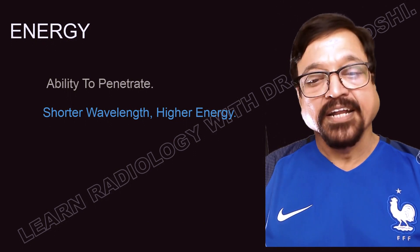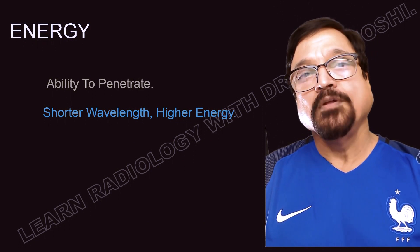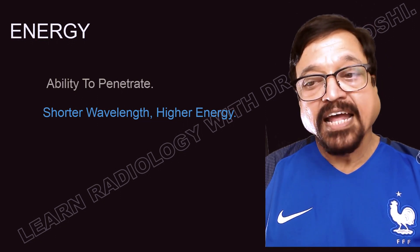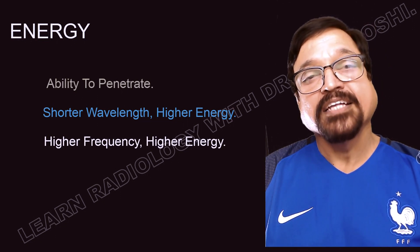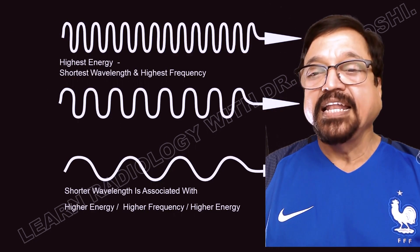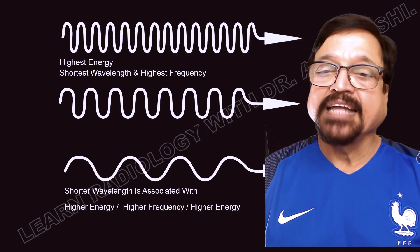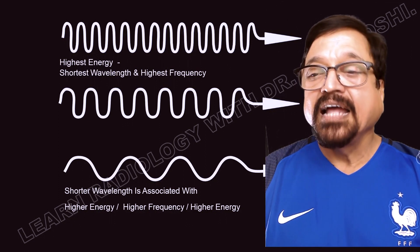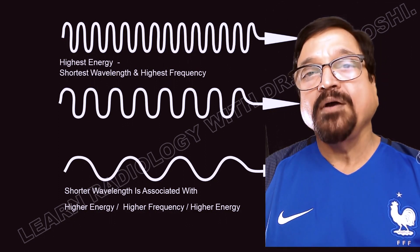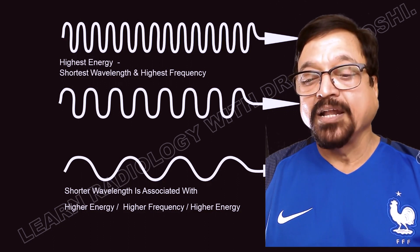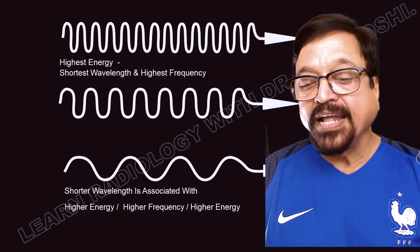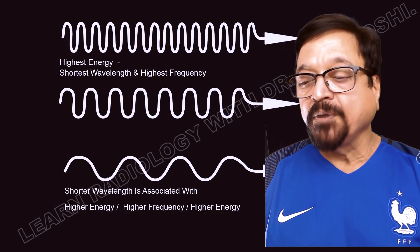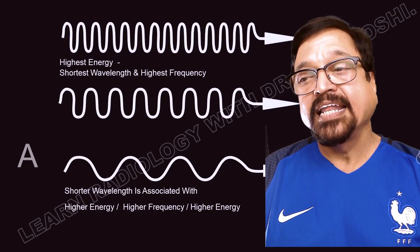Energy relates to the ability to penetrate. Shorter the wavelength, higher the energy. So gamma rays have short wavelengths and high energy compared to radio waves. High-energy waves have short wavelengths and high frequency, making them more penetrating. Lower wavelengths mean higher energy, higher frequency, and greater destructive power.